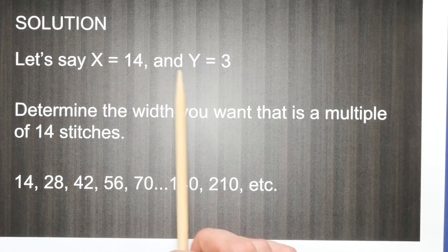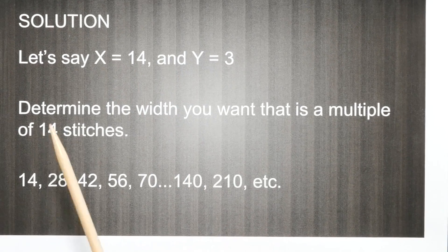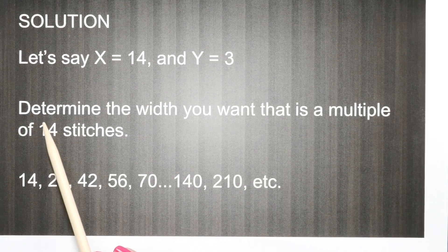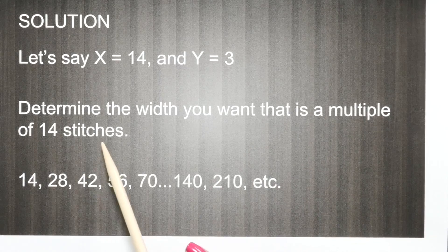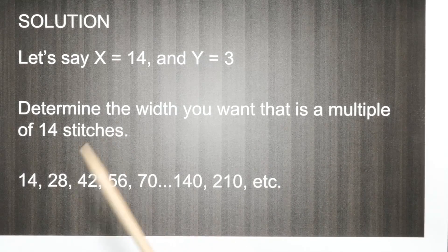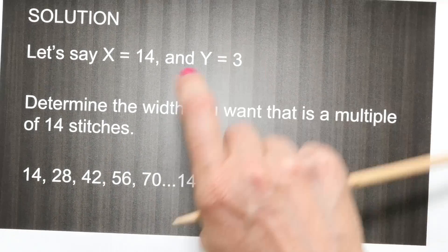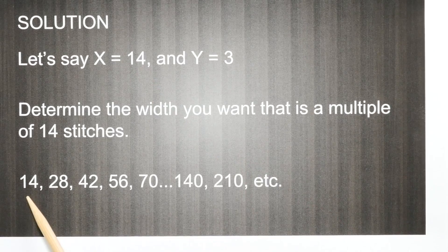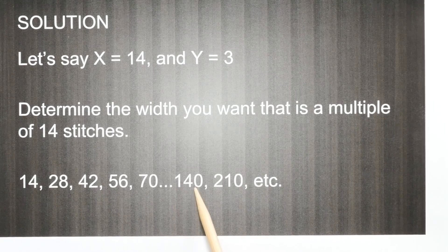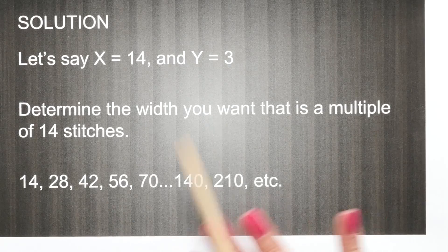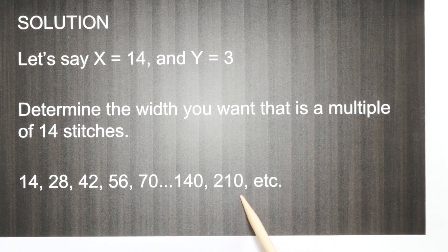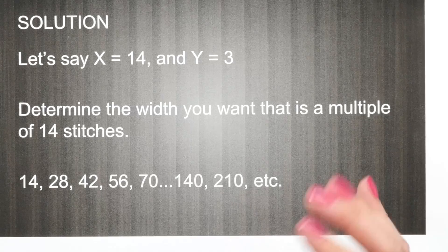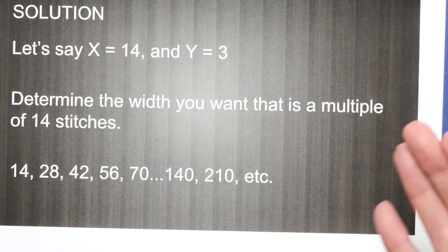Let's say x is 14 and y is 3. Determine the width you want that is a multiple of 14 stitches — we're not even thinking about the three yet. Just focus on the 14: 14, 28, 42, 140, 210 — any width in the world, as long as you have enough yarn for it. A multiple of 14 that gets you the width that you know you want this blanket to be.